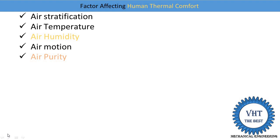The next factor is air purity. Air can contain toxic gases, small particles, suspended solids, bacteria, smoke, and various viruses, all of which are harmful to human life. Therefore, air needs to be properly filtered before entering any space. Our human body requires filtered air, and for this purpose, an air filter is provided in the air conditioning system.